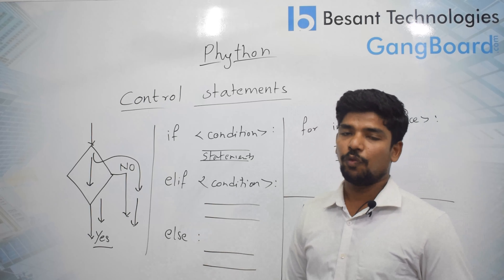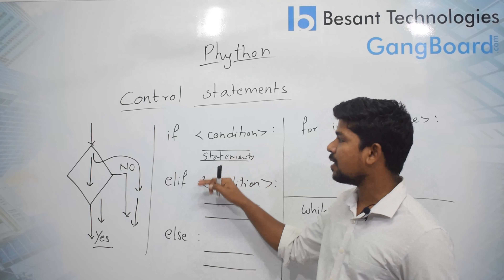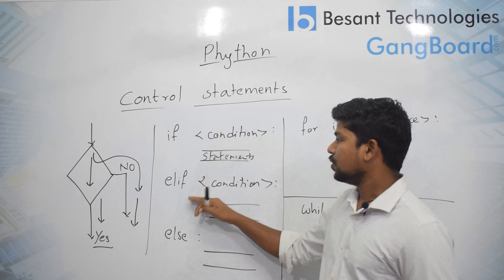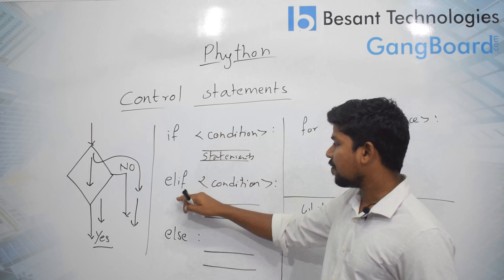If can be followed by elif, where elif is an alternative condition for if. After elif you can also check a condition, then follow up with statements. If the first if condition fails, then you check the elif condition and run those statements. If elif also fails, the final case will be else.